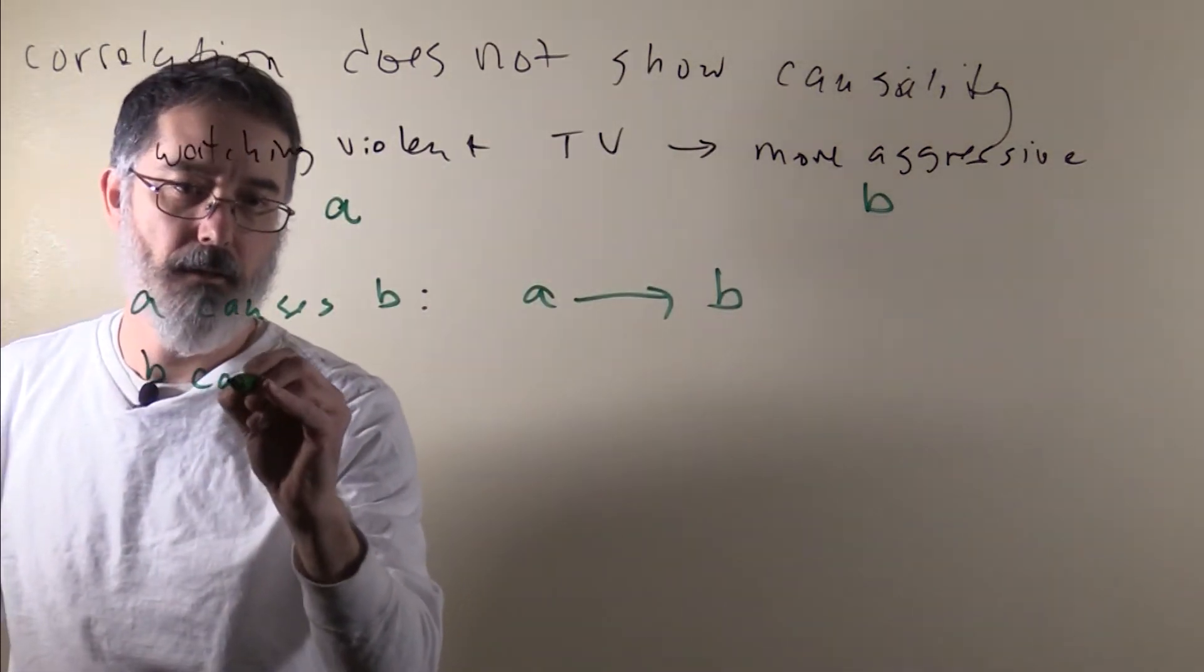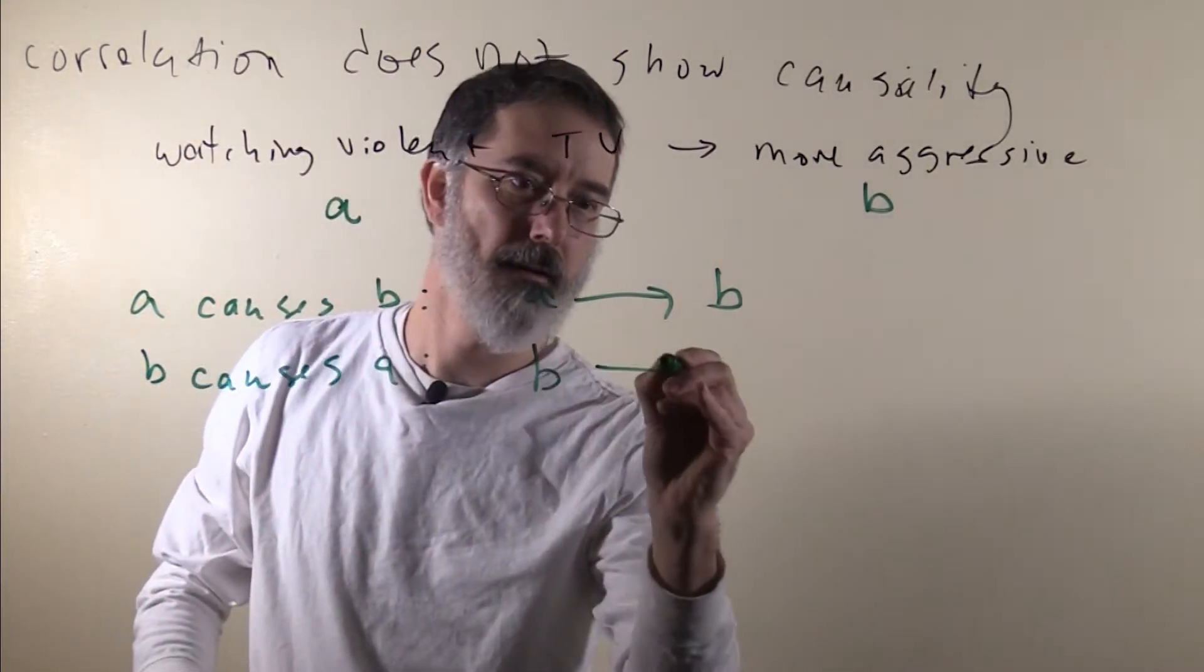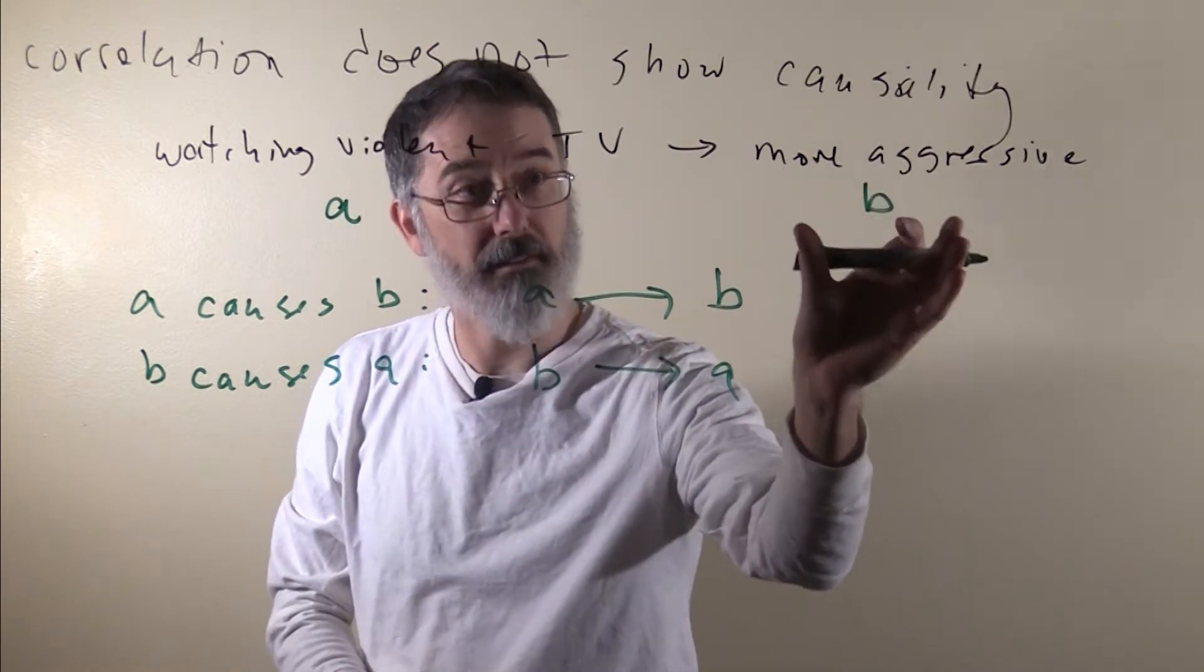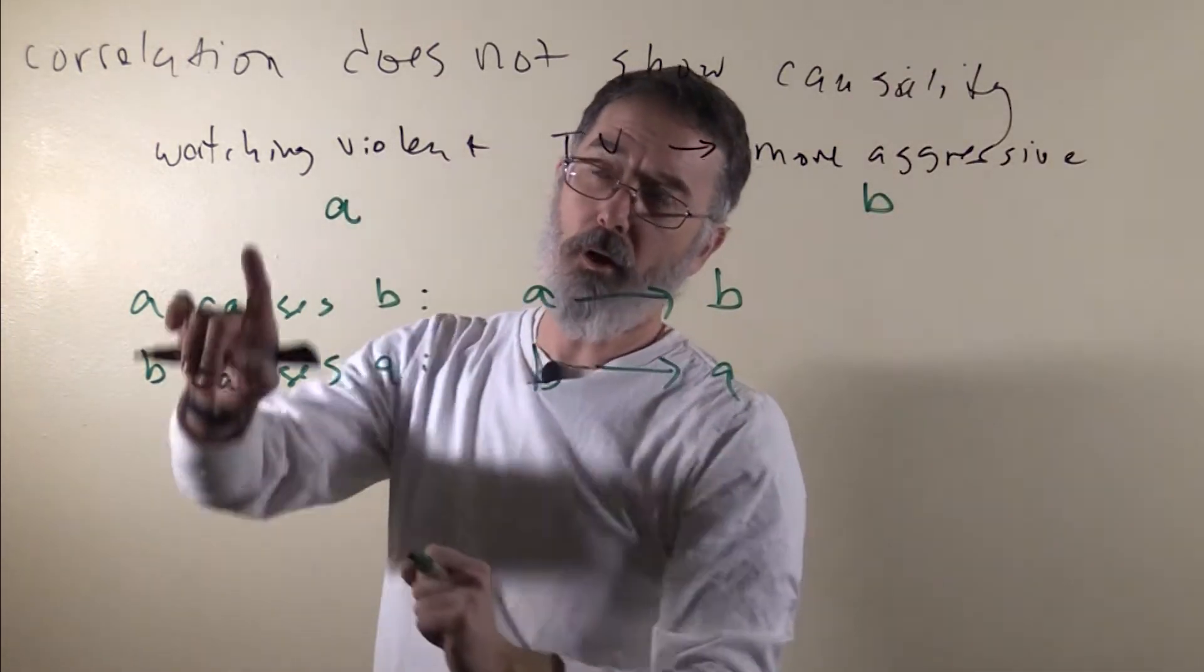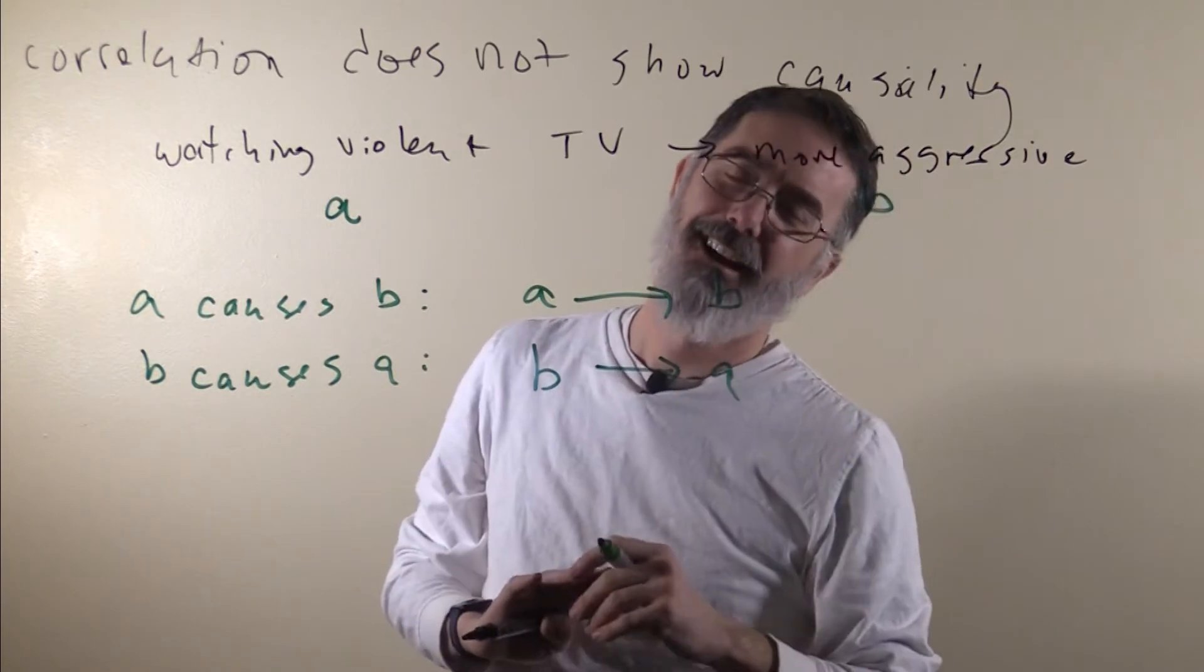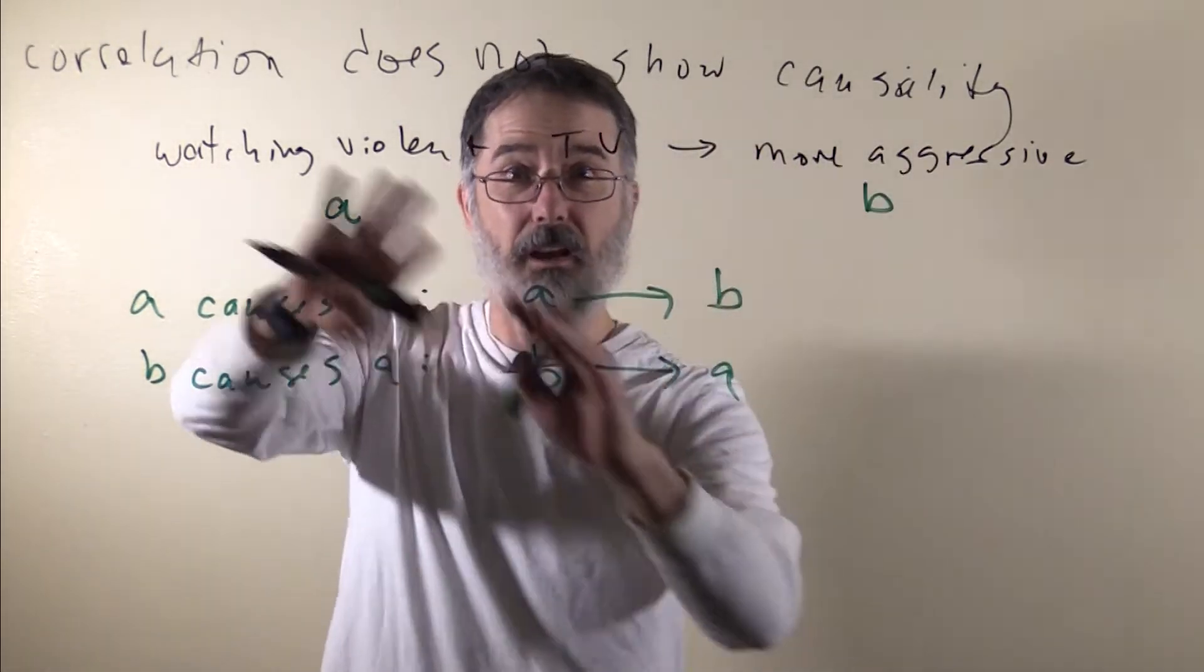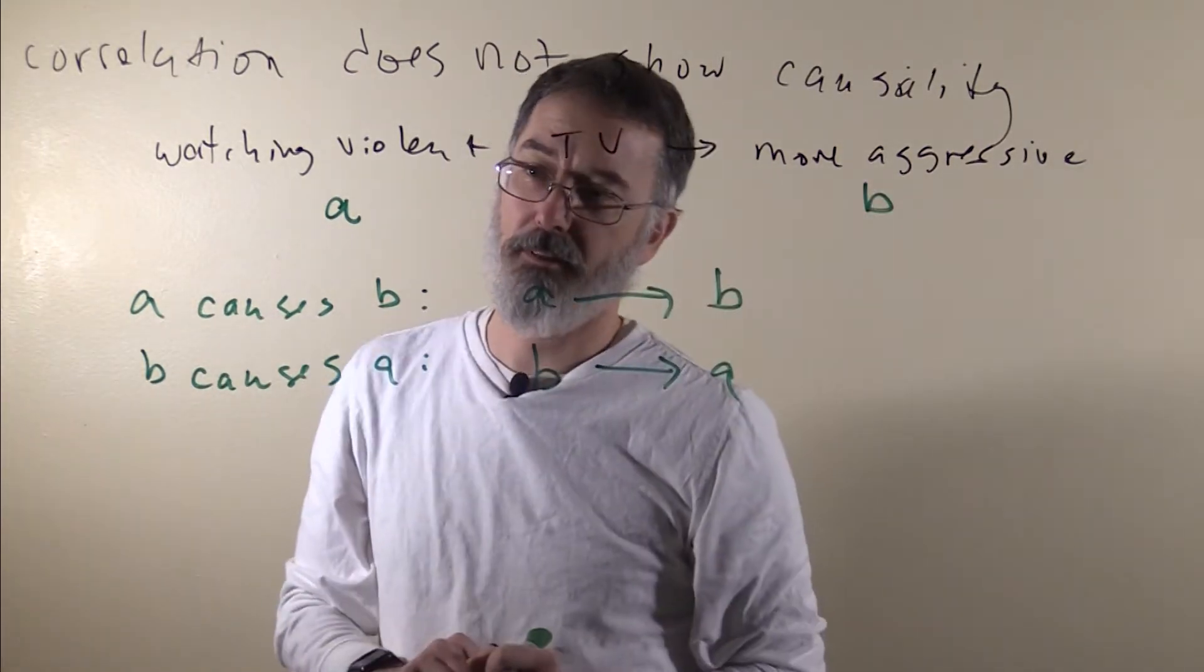So what this would mean is that kids who are more aggressive might seek out more violent TV and watch more violent TV because they have more aggressive tendencies. They might like violence in their life and on the TV. This is the reverse causal direction, and it is also consistent with the observed positive correlation between these two variables.